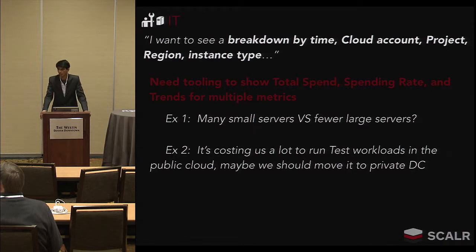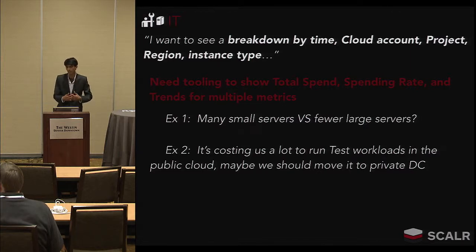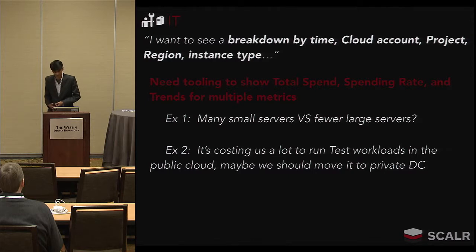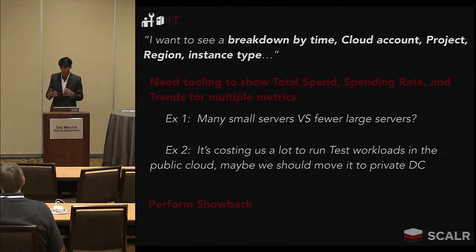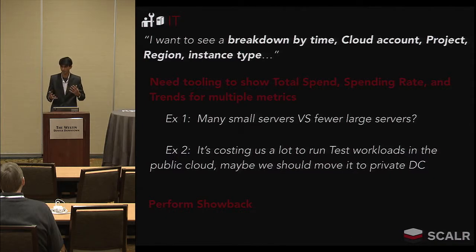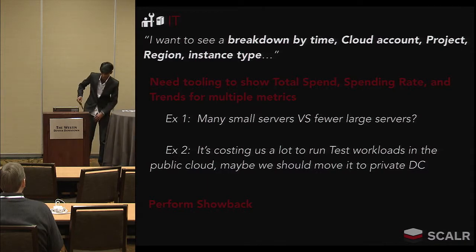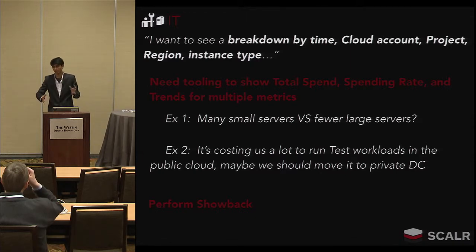A second example: it might be costing a lot to run workloads in your public or private cloud, and it may make sense to shift that workload onto one or the other. By getting a breakdown by cloud and by region, you can say, 'This project is costing too much — maybe it makes sense to run it at our own data center.' Third is to actually perform showback. When the IT department gets their bill and sees that Joe in department A cost this much, they can go to Joe and say, 'Why did you spend this much this month? Why did you use this many instance types? Were you expecting this influx of new application or database servers?' It's pretty critical that IT has the ability to break down cloud costs to perform showback.